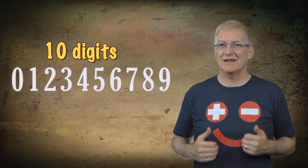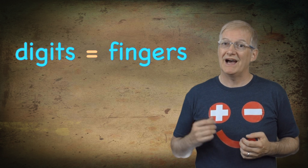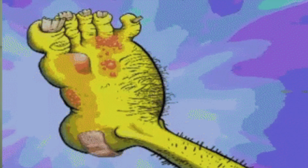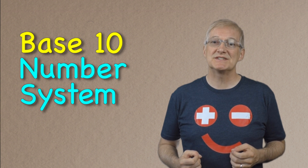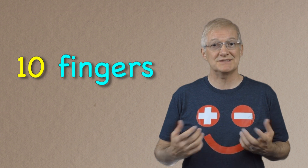Now these 10 symbols are called digits and the digits look like this. Now some of you might be thinking, hang on a minute, I thought digits were just another name for fingers — and you'd be absolutely right. In fact, this is why when young children are learning to count to 10 they often use their fingers to help them out. So our base 10 number system uses 10 digits because us humans have 10 fingers, which are also known as digits.